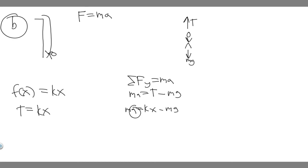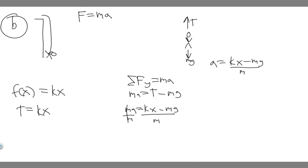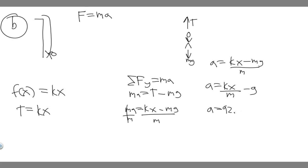We're solving for maximum acceleration, so divide both sides by m: a equals kx over m minus g. We know all these variables — we solved for K in the last part. Plugging in: a equals 92.57 (using the unrounded value) times x, where x is the stretch distance of 19 meters at the maximum point, going from 12 to 31 meters, over mass equals 55.